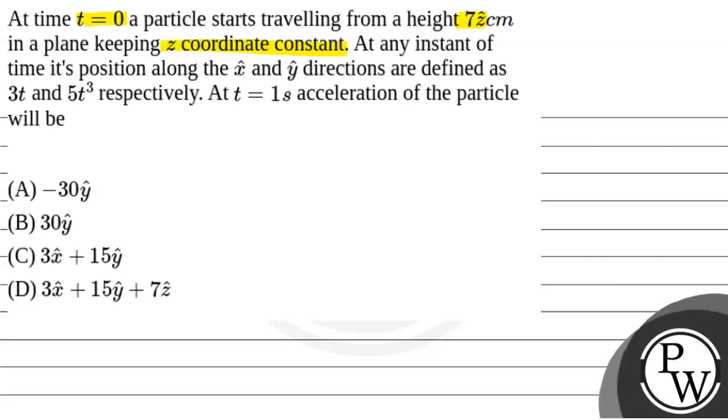keeping z coordinate as constant. So our z coordinate is constant. At any instant of time, its position along the x̂ and ŷ direction are defined as 3t and 5t³ respectively. At t equals 1 second, the acceleration of the particle will be what? Right?